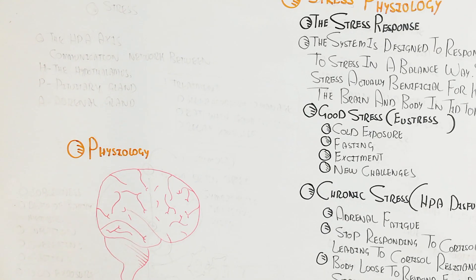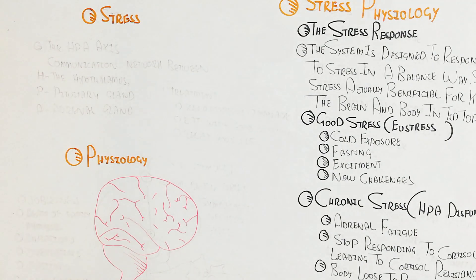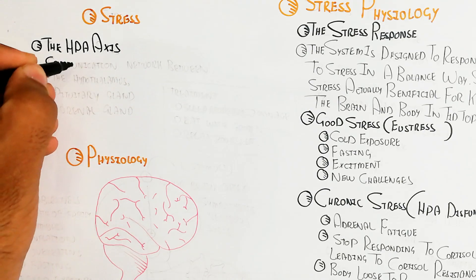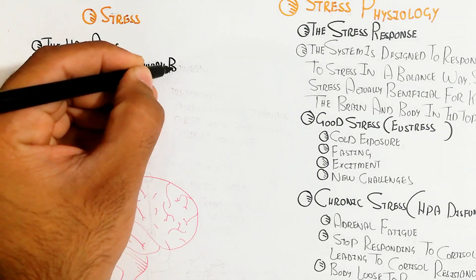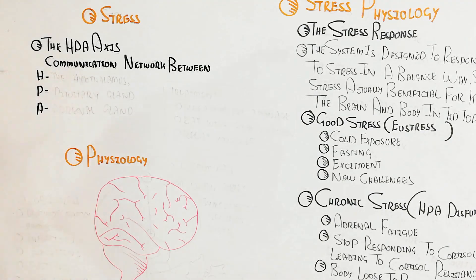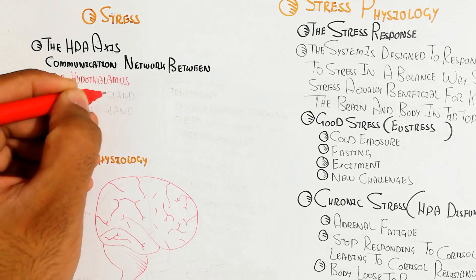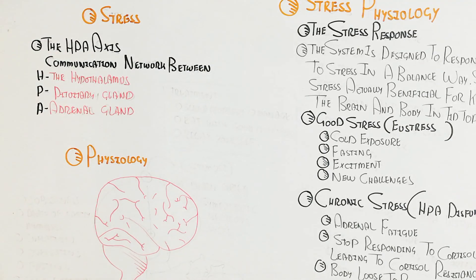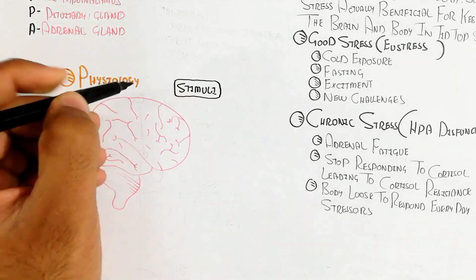Now we will understand the physiology of stress, beginning with the HPA axis. The HPA axis is the communication network between three structures: H means the hypothalamus, P means the pituitary gland, and A means the adrenal gland. The hypothalamus is present in the brain.